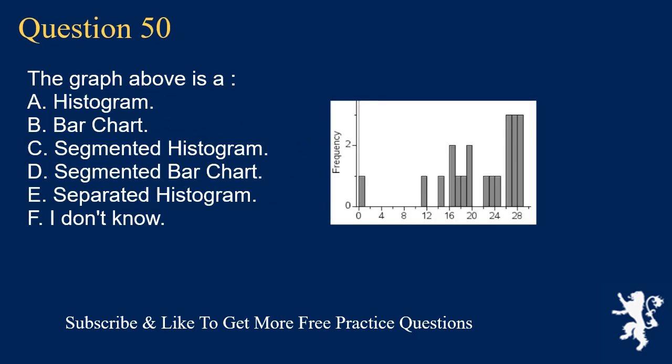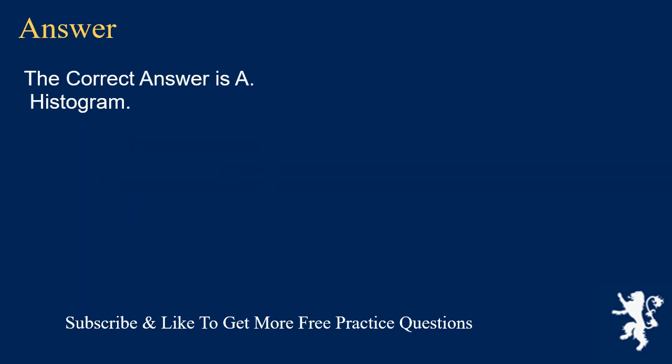Question 50: The graph above is A. histogram, B. bar chart, C. segmented histogram, D. segmented bar chart, E. separated histogram, F. I don't know. The correct answer is A, histogram.